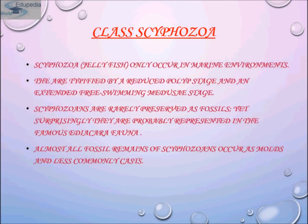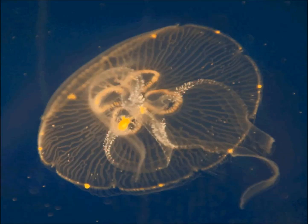Now come to Scyphozoa — the jellyfish. They only occur in marine environments. They are typified by a reduced polyp stage and an extended free-swimming medusa stage. Scyphozoans are rarely preserved as fossils, yet surprisingly they are probably represented in the famous Ediacara fauna. Almost all fossil remains of scyphozoans occur as moulds and less commonly as casts. The dominant stage is the free-swimming medusa stage, which is a distinguishing feature of scyphozoans.